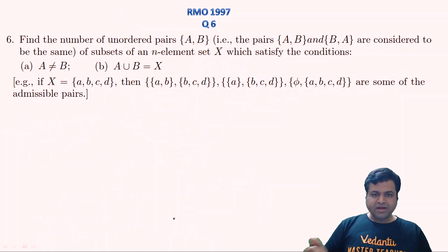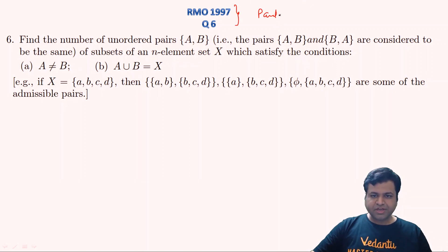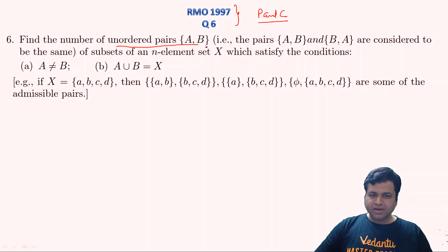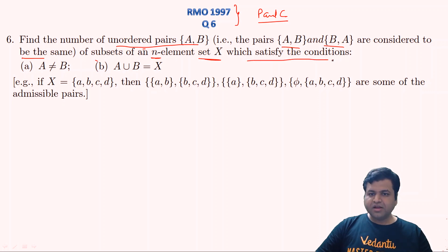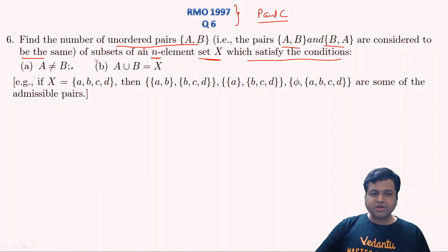Let's proceed to the next question — question number 6, the last question of year 1997. This question is very easy; it is a simple application of permutation and combination. The question says: find the number of unordered pairs {A, B} — where pairs {A,B} and {B,A} are considered the same — of subsets of an n-element set X, which satisfy two conditions: first, A ≠ B, and second, A ∪ B = X.